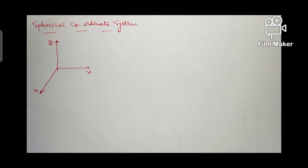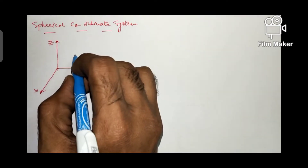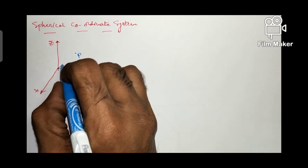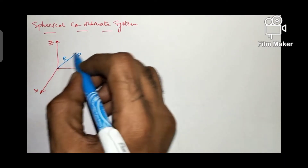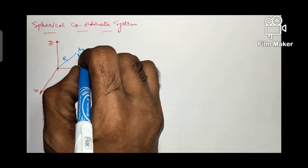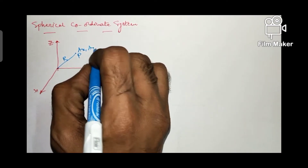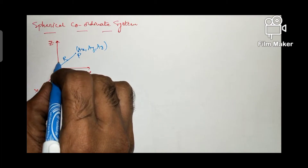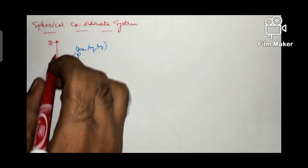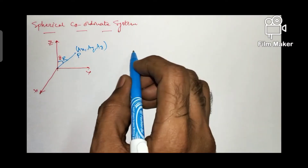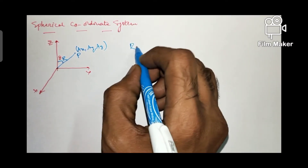Now let us consider the three axes x, y and z mutually perpendicular to each other, and I am locating point P here with coordinates Ax, Ay and Az. R is the radius drawn from the origin. Here theta is the angle measured from the z axis to the radial line. These are the two coordinates which we consider in spherical coordinate system: R and theta.